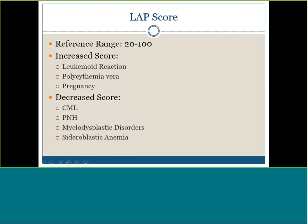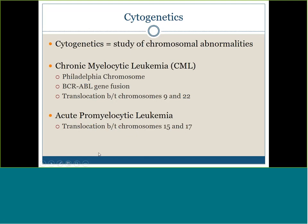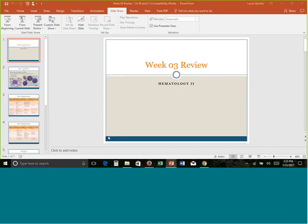TRAP stain is used specifically to diagnose hairy cell leukemia — remember 'you TRAP your hairy monster.' For cytogenetics — the study of chromosomal abnormalities — remember the CML Philadelphia chromosome. An additional chromosome translocation to know is for acute promyelocytic leukemia (APL): translocation between chromosomes 15 and 17. We'll see this leukemia again in upcoming weeks.